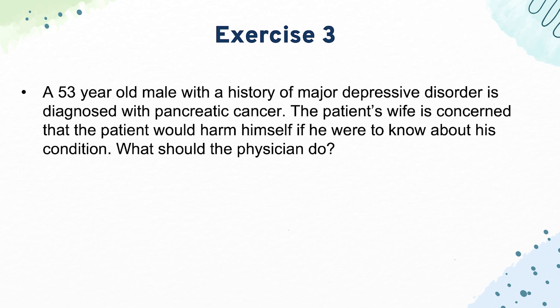Exercise 3: A 53-year-old male with a history of major depressive disorder is diagnosed with pancreatic cancer. The patient's wife is concerned the patient would harm himself if he were to know about his condition. This is a prime example of therapeutic privilege — withholding information from the patient when it could cause him to hurt himself or others. It's possible this patient with depression might try to commit suicide knowing he has a terminal cancer, so it might be warranted to withhold the diagnosis from the patient.